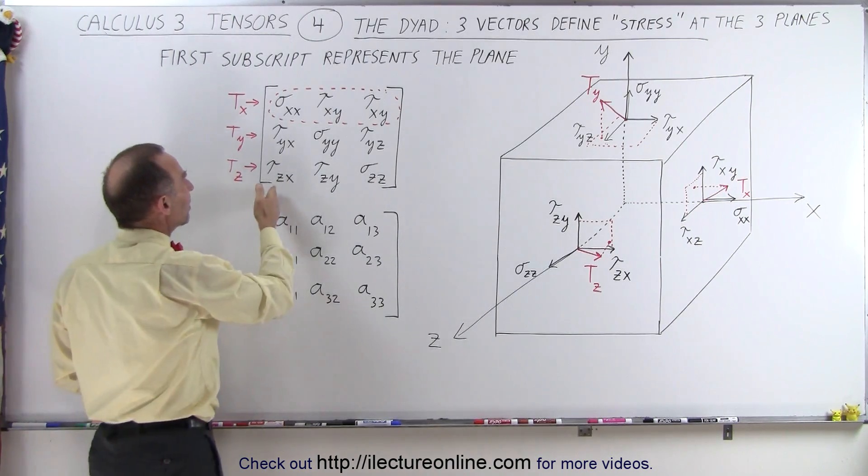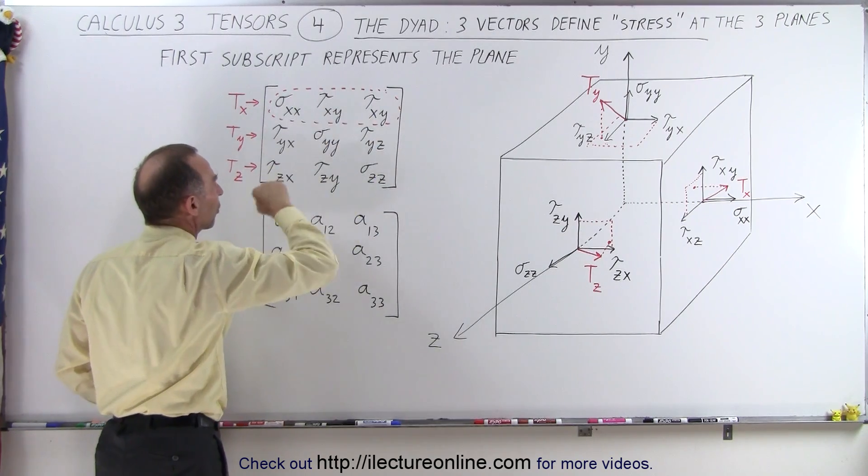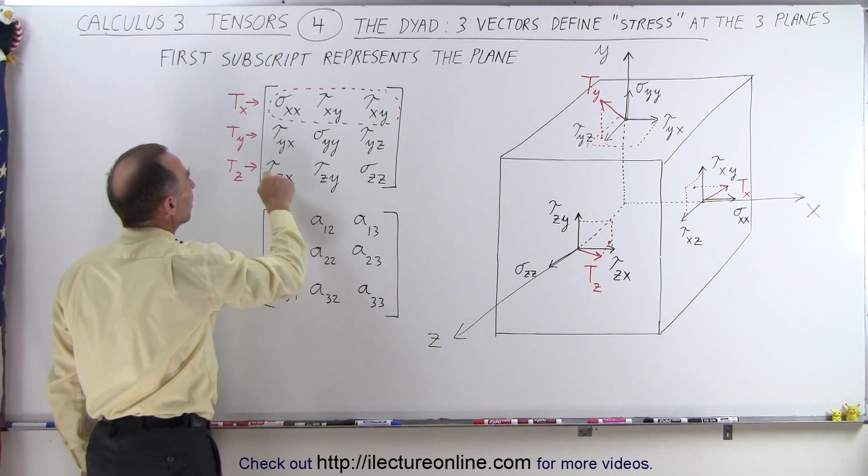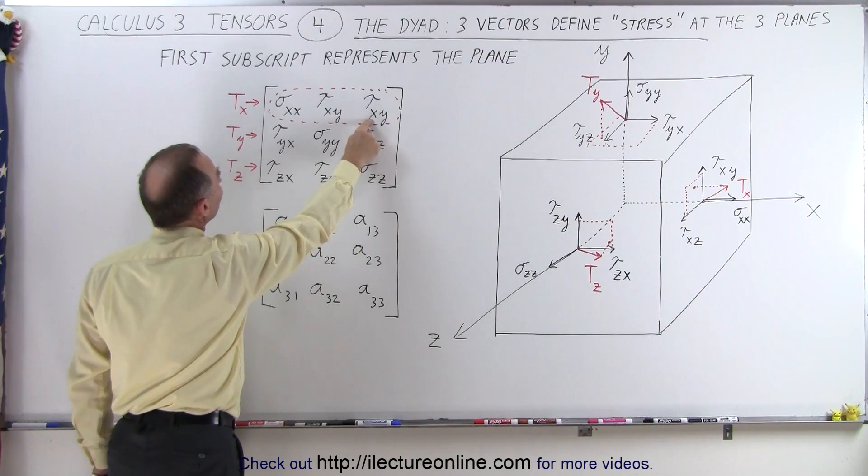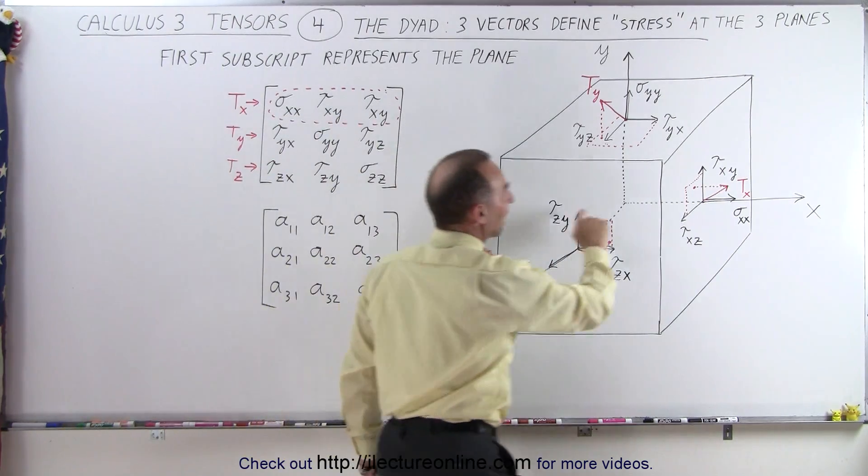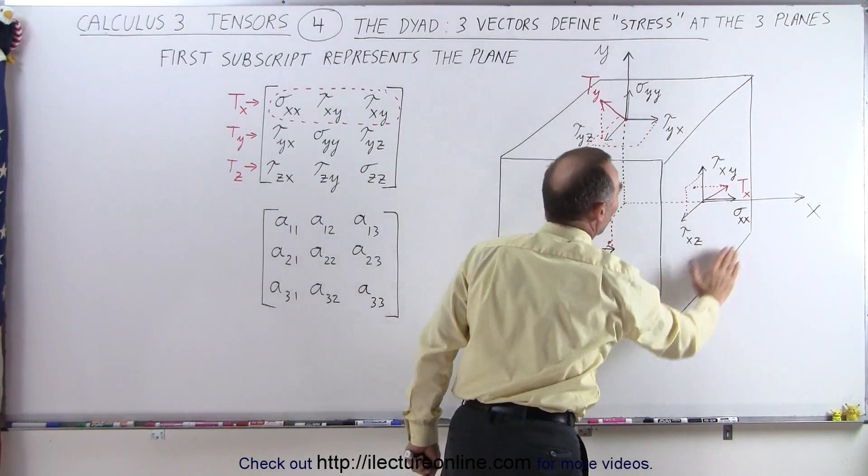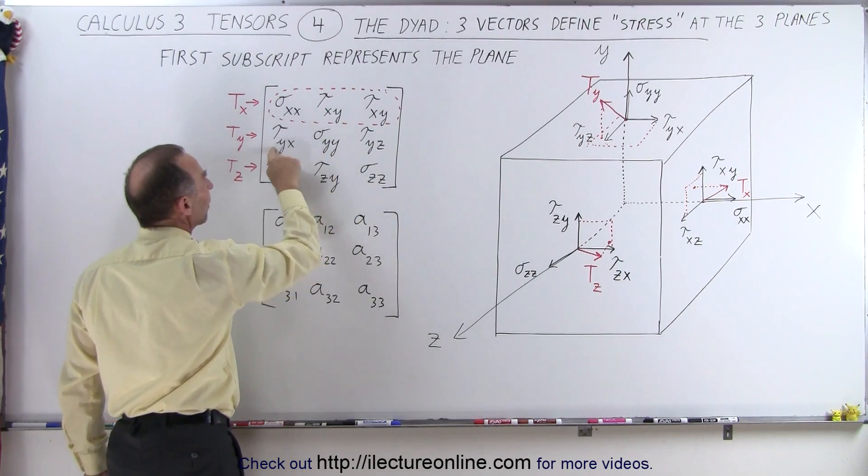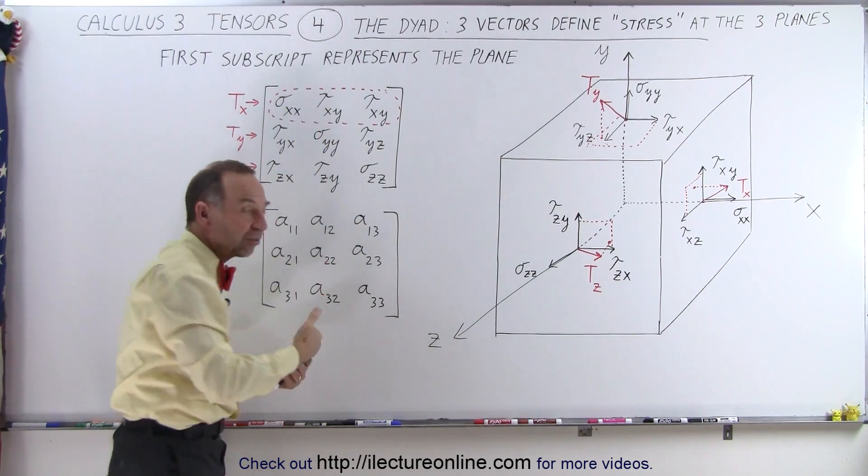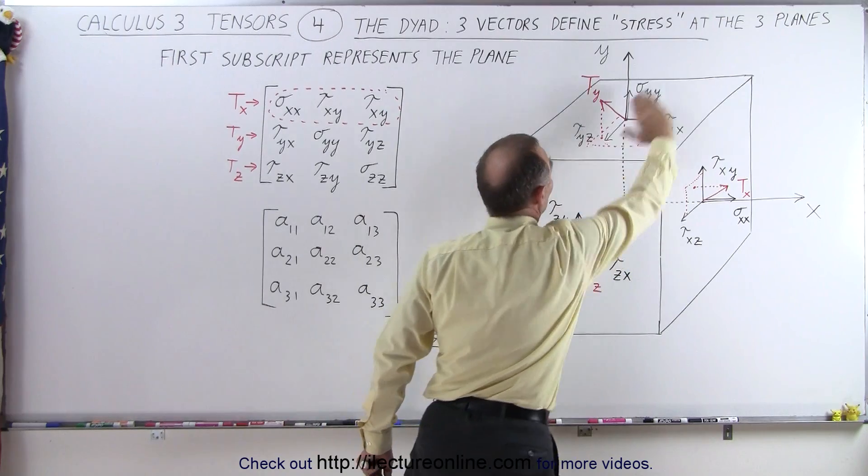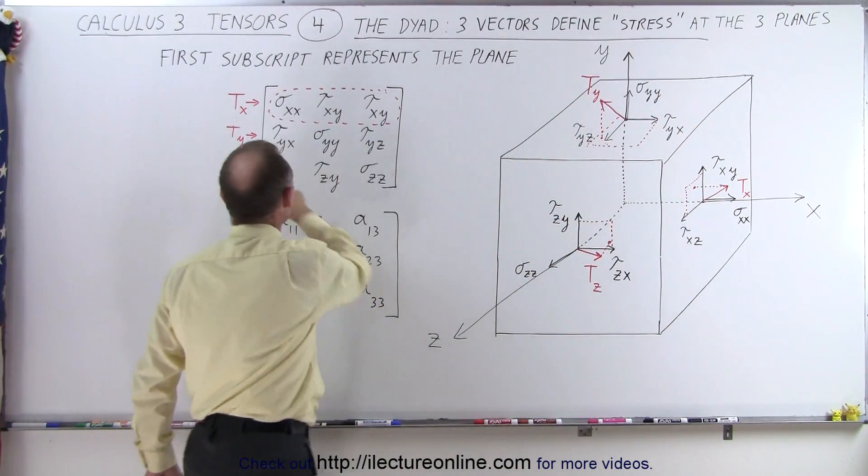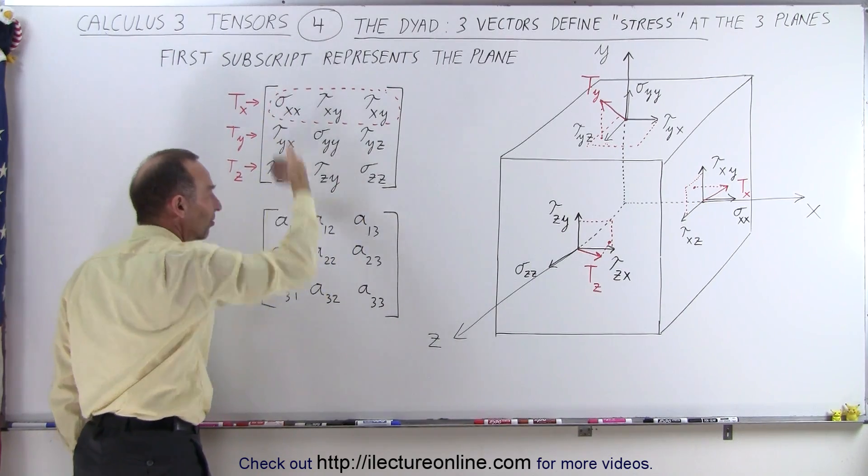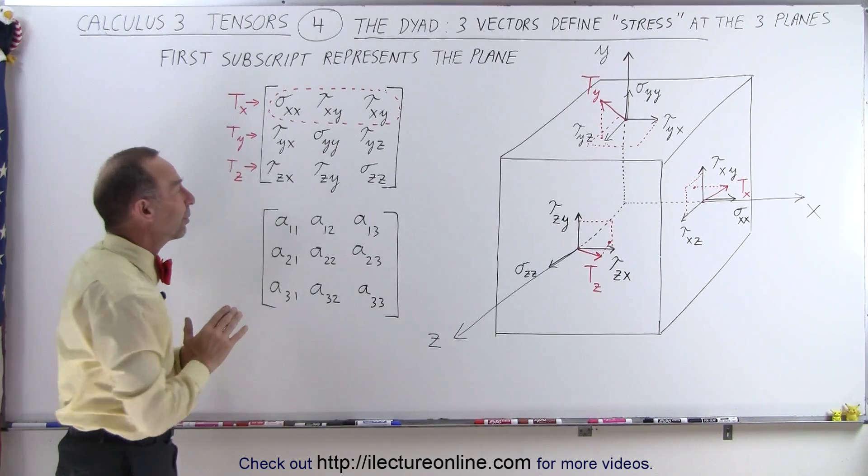It all has to do with the two numbers representing the nine elements or the nine components. You have the first subscript and the second subscript. In this particular example, the first subscript represents the axis that was cut. So if the x-axis is cut, we have what we call the y-z plane. When you see the first subscript, that represents that the cut is across that axis. The first subscript z means we're cut across the z-axis, exposing the x-y plane.